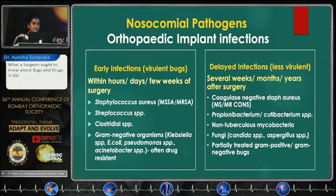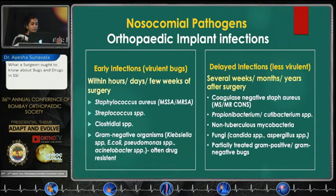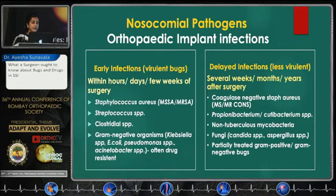What about nosocomial pathogens? In orthopedic implant infections, divide them into early infections — caused generally by more virulent pathogens occurring within hours, days, or a few weeks of surgery. These are most importantly staph, whether MSSA or MRSA, streptococcus, clostridial species, and gram-negative organisms which are often multidrug resistant. Delayed infections usually occur due to less virulent pathogens and occur several weeks, months, or years after surgery. The most important indolent pathogens are coagulase-negative staph, propionibacterium, non-tuberculous mycobacteria, and even fungi. Partially treated gram-positive or gram-negative virulent pathogens can also present months later if treated empirically earlier.